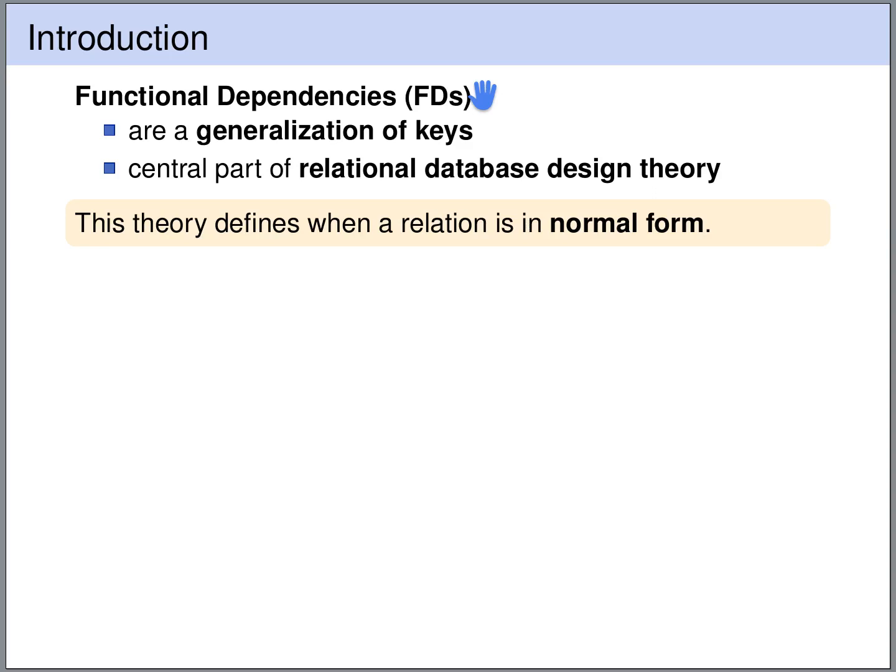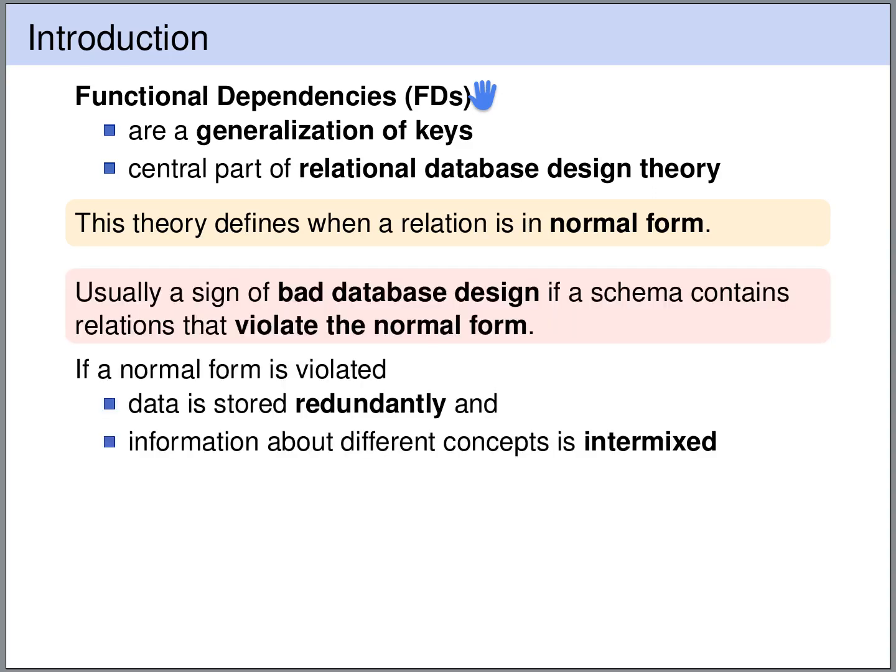When we have relations that violate a normal form, then usually this is a sign of a bad database design, because it means that data is stored redundantly, or that information about different concepts is intermixed.